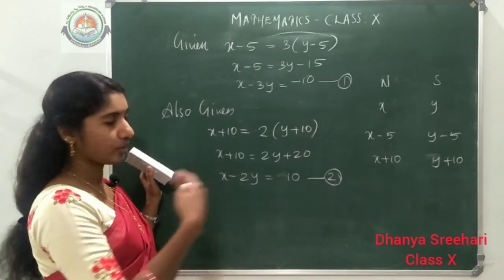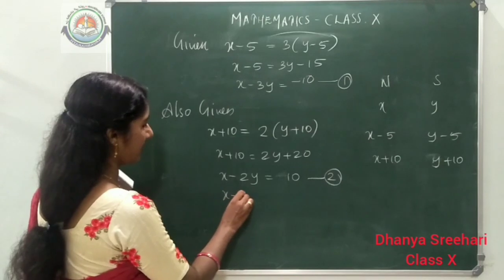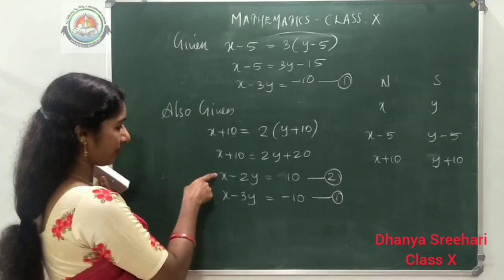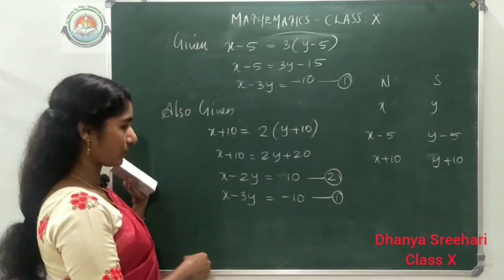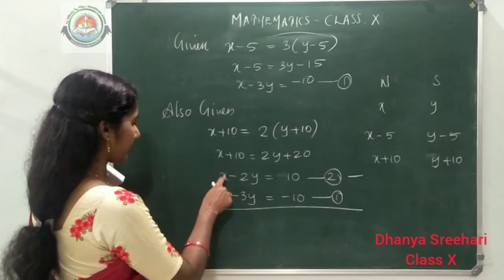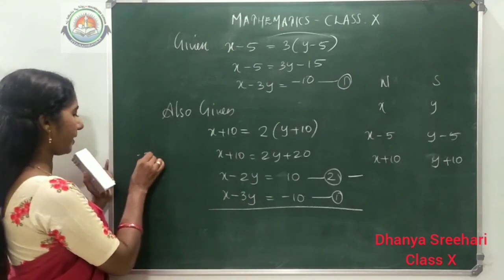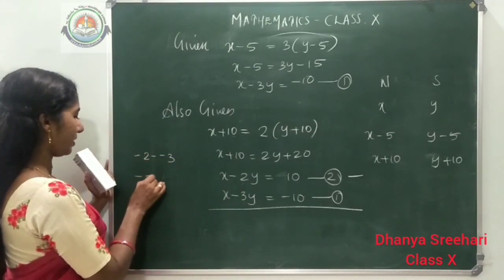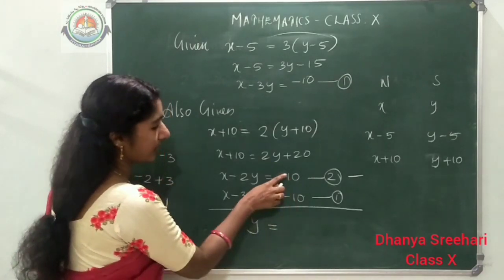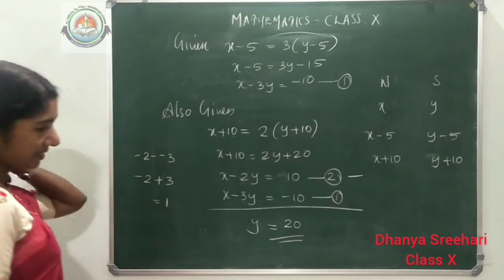The x coefficients are both 1, so no need to make them equal — direct subtraction. Subtracting: x minus x becomes 0. Then minus 2 minus minus 3 equals minus 2 plus 3, which is 1. So 1y equals 10 minus (minus 10), which is 10 plus 10, giving y equals 20. We got Sonu's age as 20.